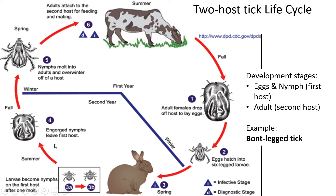Then we have the two-host tick. Here we can see there's a cow and a rabbit — two different species. The tick attaches to these two different species at different times based on its life cycle. The picture may look like a blue tick, but it's not — the bont-legged tick is the example of a two-host tick.